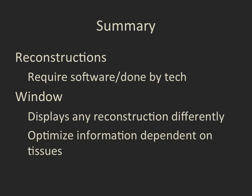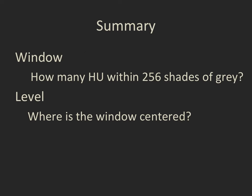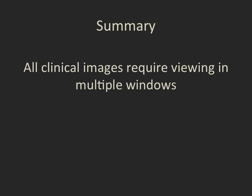To summarize: reconstructions of CT scans require specialized software and are usually done by the technologist on the raw data. But the window allows you to change the display of any reconstruction so that we can maximize the information available to interpret, depending on the tissues we want to look at. The window is how many Hounsfield units we wish to look at within those 256 shades of grey — the narrower the window, the more contrasty the image and the more subtle the changes you'll be able to see. The level is where we center that window. To maximize diagnostic information from any CT scan, all clinical images require us to view them on multiple windows.